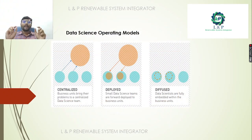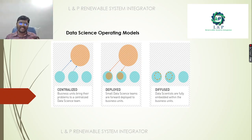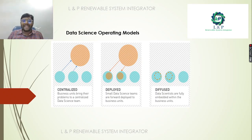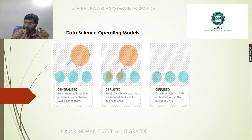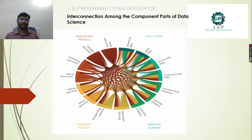Categorizing the data science operating models: there are three. Centralized — business units bring their problems to a centralized data science team. Deployed — small data scientist teams are forward-deployed to the business units. Diffused — data scientists are fully embedded within the business units.